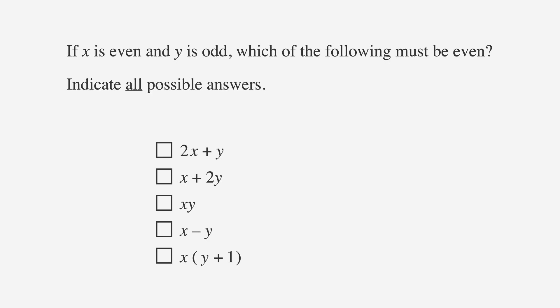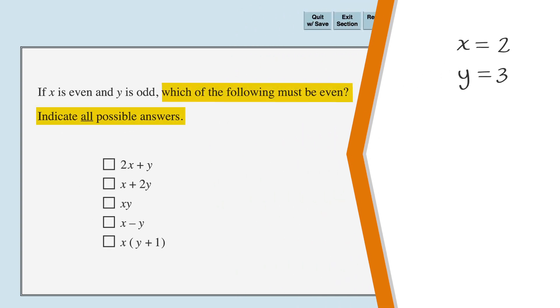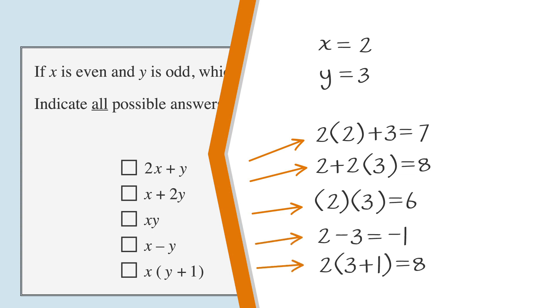Rewriting the problem mathematically, we're told that x is even and y is odd. Let's pick easy numbers that fit for x and y. Let's assume that x equals 2 and y equals 3. We're then told to find all answer choices that are even. Now we plug the values we picked for x and y into each answer choice. Picking small numbers comes in handy here.